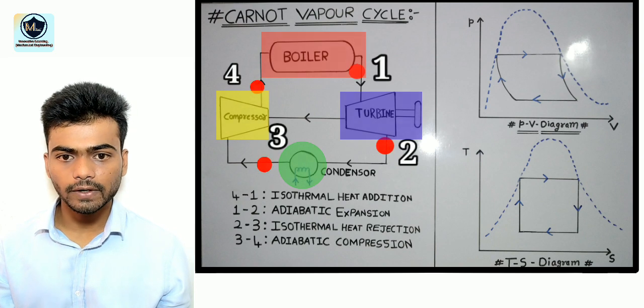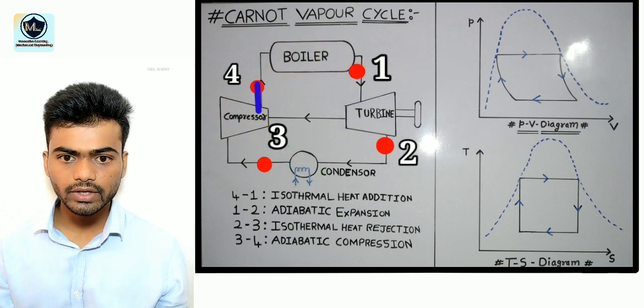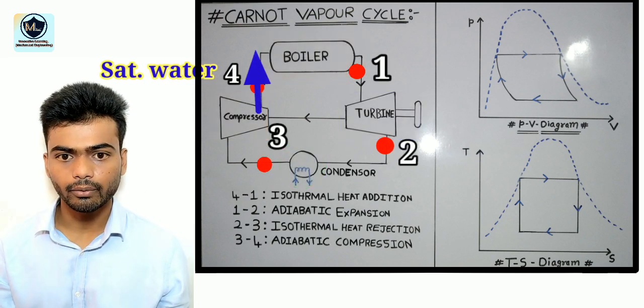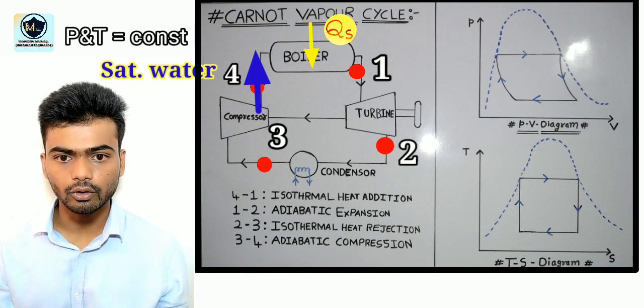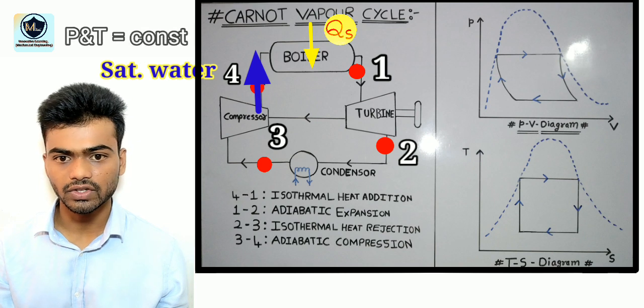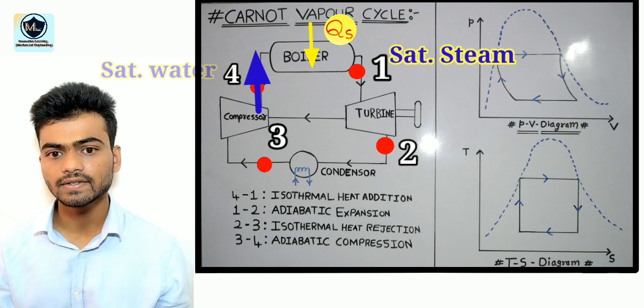Consider four points in the diagram. The saturated water enters the boiler where heat is supplied and evaporation takes place at constant pressure and temperature to form saturated steam.